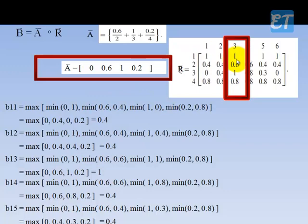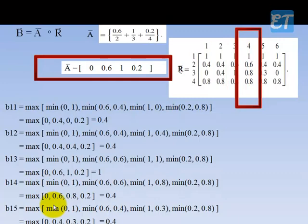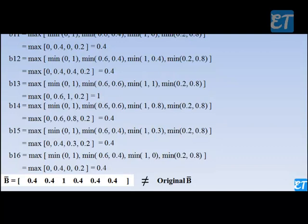For B13, using this row and this column: min of 0 and 1 is 0; min of 0.6 and 0.6 is 0.6; min of 1 and 1 is 1; min of 0.2 and 0.8 is 0.2. The maximum is 1. Then similarly for B14, B15, and so on. Finally we get B as: 0.4, 0.4, 1, 0.4, 0.4. This is not equal to our original B.